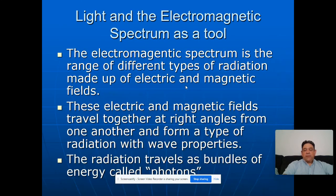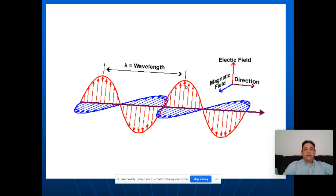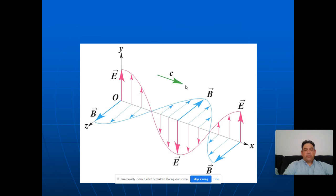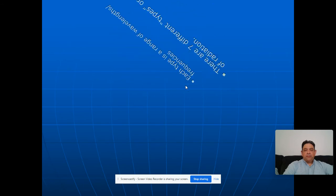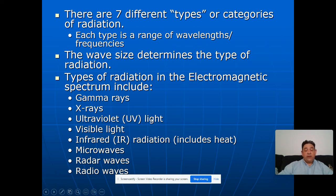Then we turned to the electromagnetic spectrum, because everything in the electromagnetic spectrum behaves like a wave. We talked about what was waving in the electromagnetic spectrum, which is basically electric fields and magnetic fields. Then we talked about the different kinds of waves: gamma rays, x-rays, UV light, visible light, infrared radiation, microwaves, radar waves, and radio waves. The only difference between all these is their frequency and thus their energy.